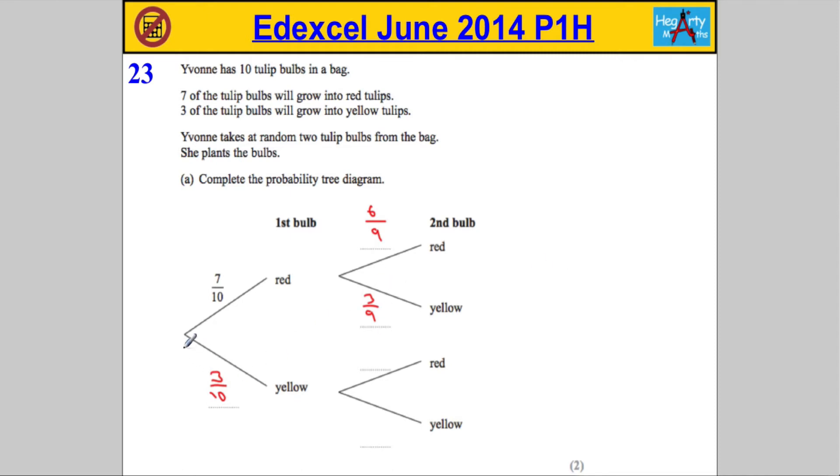Over this side now, if I take yellow first, that means we still have 7 red in this version of events. Yellow first followed by red, well, there's 7 left and there's 9 in total. And if I choose yellow the first time, that means there's only 2 yellows left but still 9 in the bag. So, that's the diagram completed.